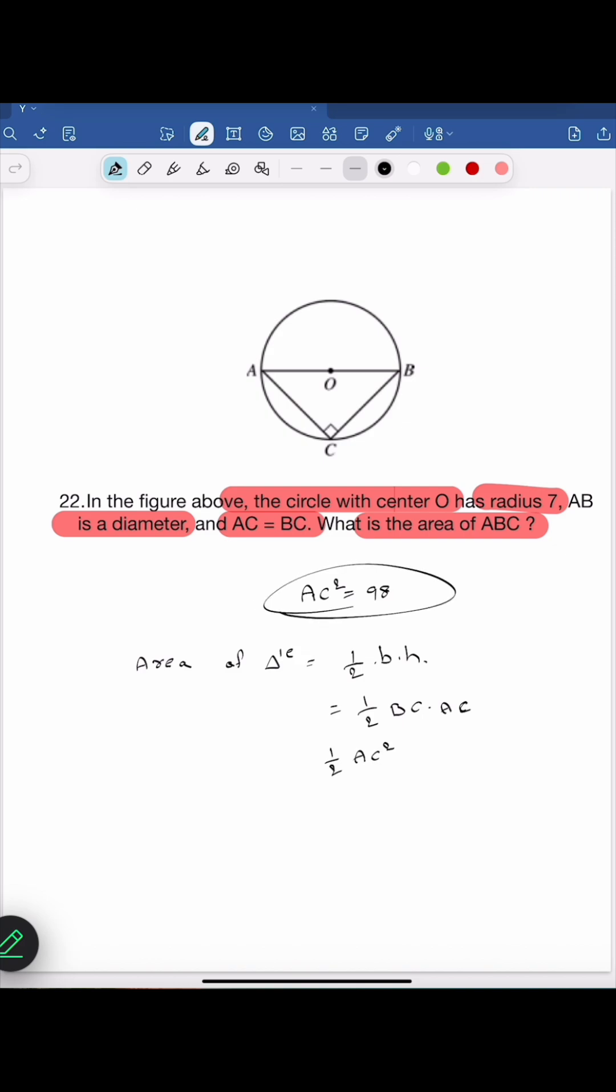We know AC square is equals to 98. So half times 98 is equals to 49. So the area of the triangle is 49 square units.